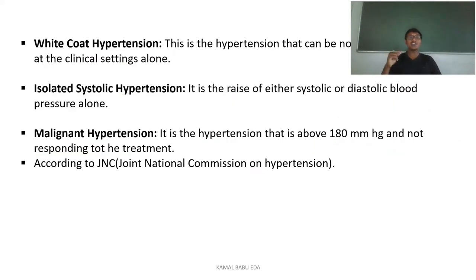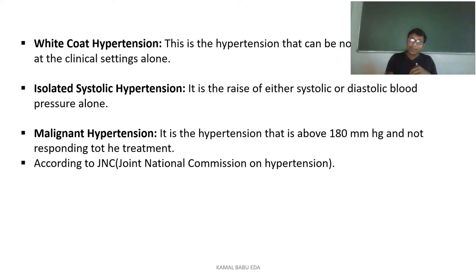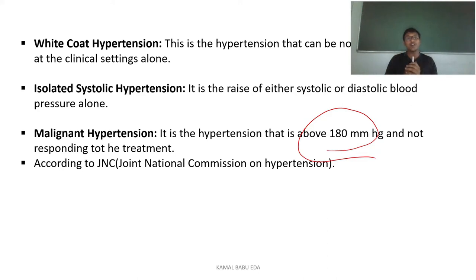We also have isolated systolic hypertension, where either the systolic or diastolic pressure alone is raised — the systolic pressure will raise and diastolic remains constant, or vice versa. And we have malignant hypertension, which is defined by the Joint National Commission on Hypertension as blood pressure above 180 mmHg where the person is not responding to treatment.